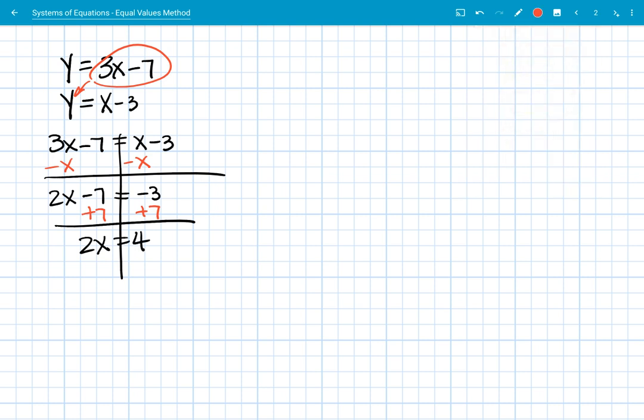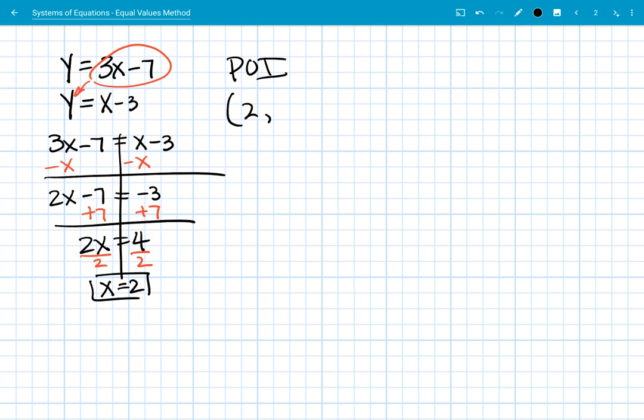And we'll divide, and that gets me x equals 2. So according to that, my point of intersection is at 2 comma something. And that x value is 2.